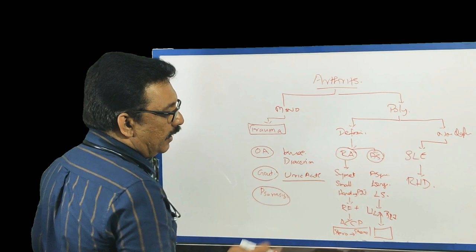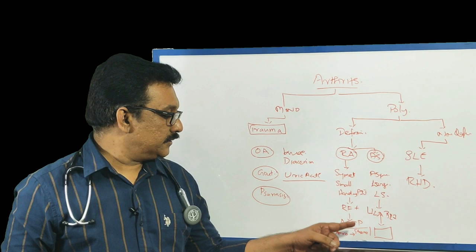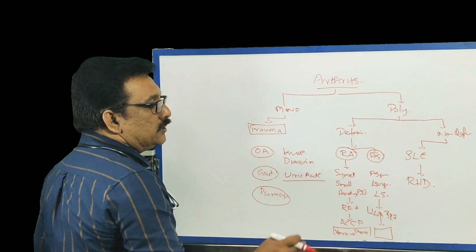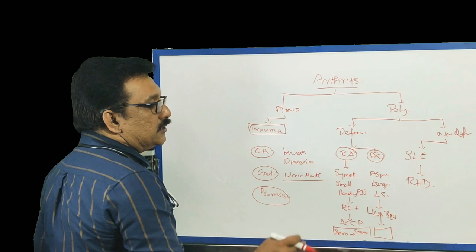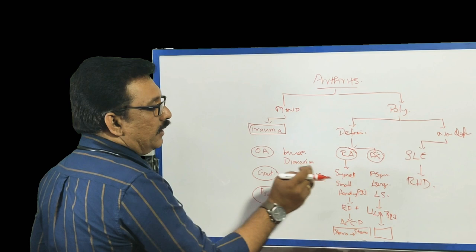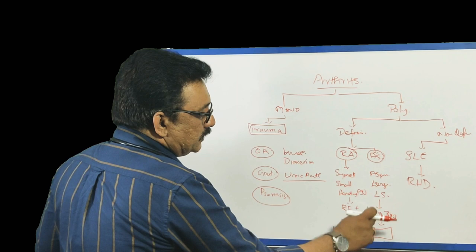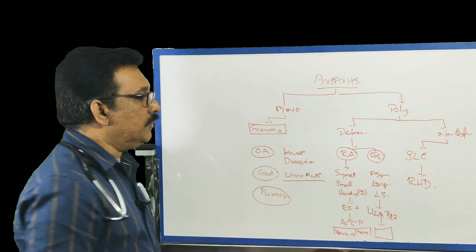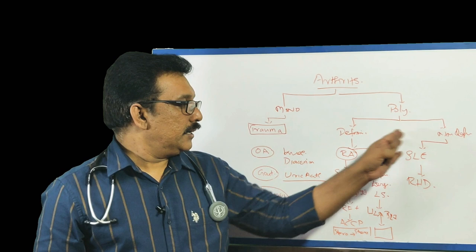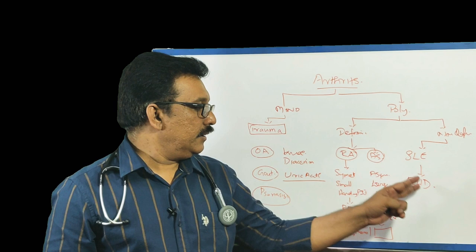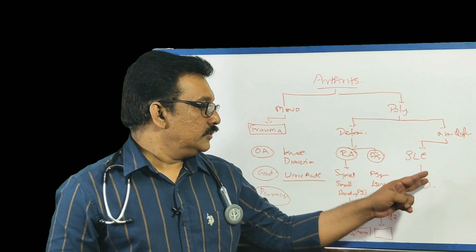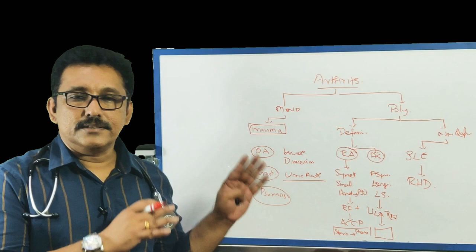Treatment for rheumatoid arthritis is steroids, steroid-sparing agents, or biologicals such as rituximab. Ankylosing spondylitis and related arthritis including psoriasis show asymmetrical large joint and lumbosacral spine involvement — note that RA never involves the lumbosacral spine; rarely it involves the cervical spine. HLA-B27 may be positive. Physiotherapy plays a major role. For non-deforming polyarthritis: SLE is the classical example with multi-system involvement but no joint deformity; rheumatic heart disease presents with fleeting joint involvement and never produces deformity. Thank you for watching this approach to arthritis classification.